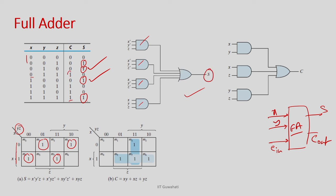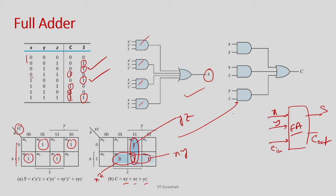Similarly, I put the carry into a Karnaugh map. You can club the 1s and get shorter product terms: xy, xz, and yz. So the carry expression is xy + xz + yz, which corresponds to 3 AND gates followed by an OR gate.